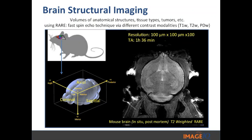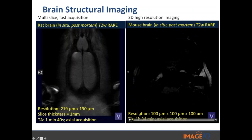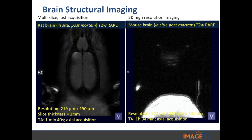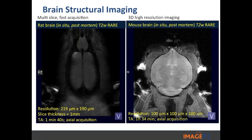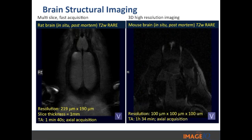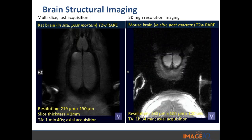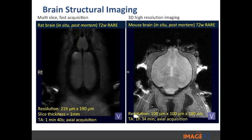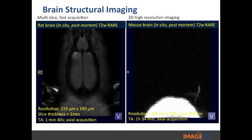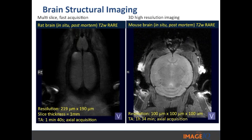As pointed out, this is the Rolls-Royce. There are different imaging modalities — such as multi-slice acquisition. Here is another example of brain structural imaging: a multi-slice T2 RARE acquisition at a little lower resolution but with one millimeter slice thickness. This took approximately one minute and 40 seconds for acquisition. So when you're looking for something specific or just want to identify structures without necessarily quantifying, going with a multi-slice acquisition would be the way to go.